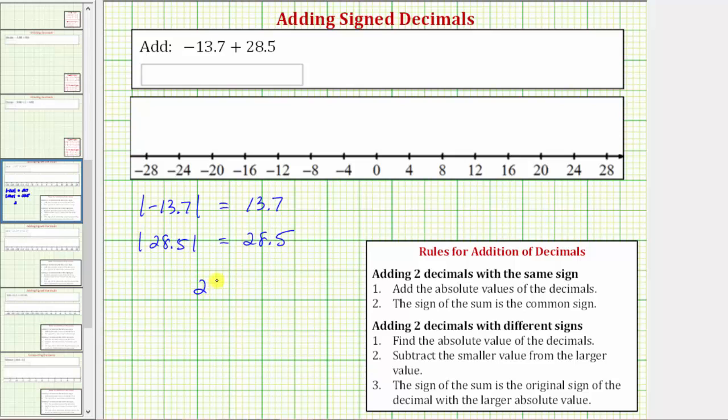So 28.5 minus 13.7. We need to make sure we have the place values lined up vertically. Move the decimal point down into the difference and now we subtract. We need to perform an exchange here before subtracting. So the eight becomes a seven, and now we have 15 minus seven which is eight, seven minus three which is four, and two minus one is one.